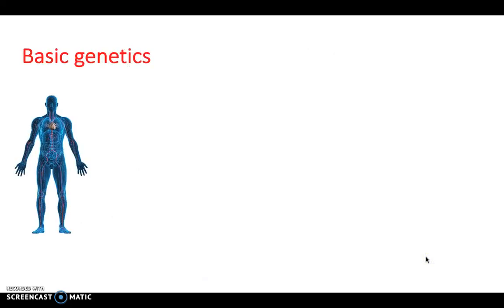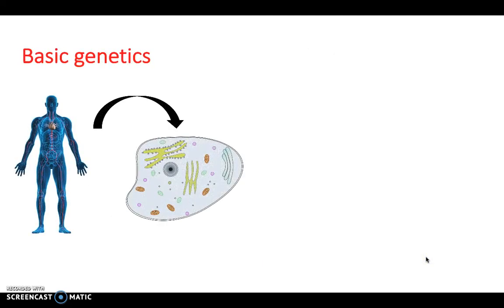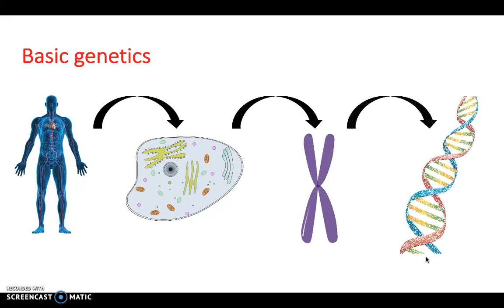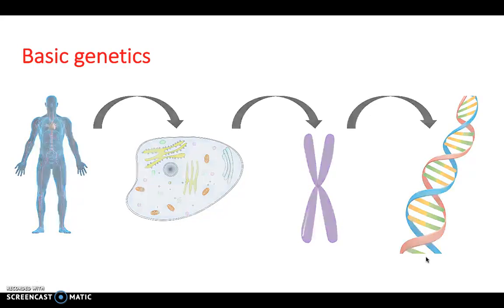So first, let's have a look at basic genetics. Of course, we're all humans, and what are we made up of? Well, we're made up of cells, which contain chromosomes, which contain DNA. So over the course of this video, we're going to be taking a look at what that truly means.